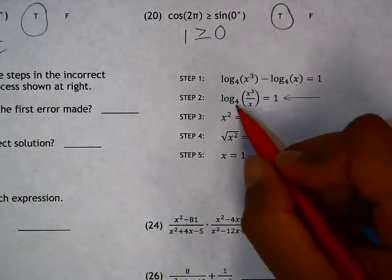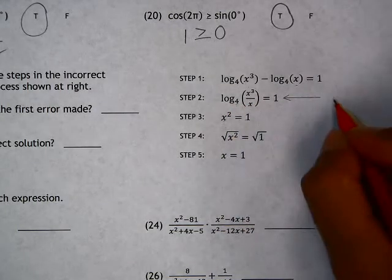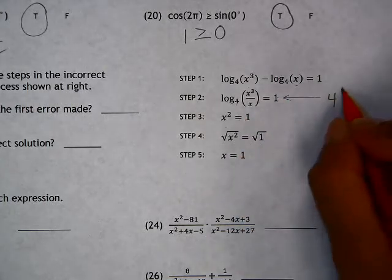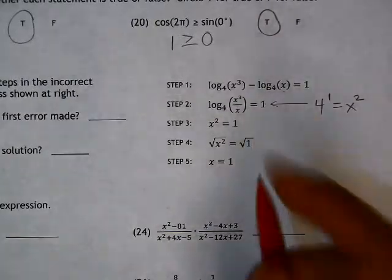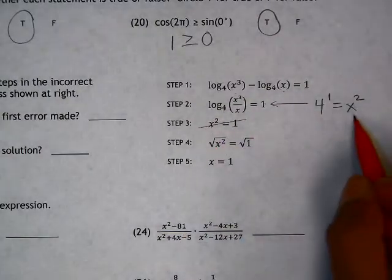So if we're going to do that, the base is 4, exponent is 1, and that's equivalent to x squared. So rather than x squared equals 1, it's x squared equals 4.